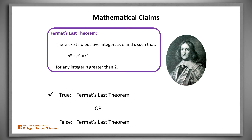Now consider Fermat's Last Theorem. Fermat thought it was true but couldn't prove it, and no one was certain about its truth until 1994 when Andrew Wiles proved that it is true. But it was true all along, even though no one knew that for sure.